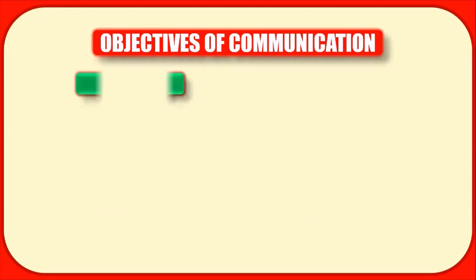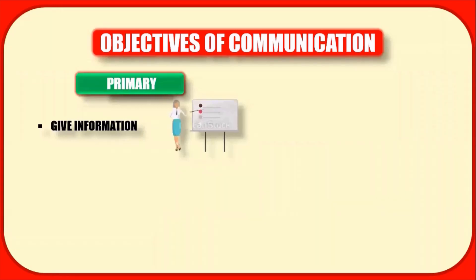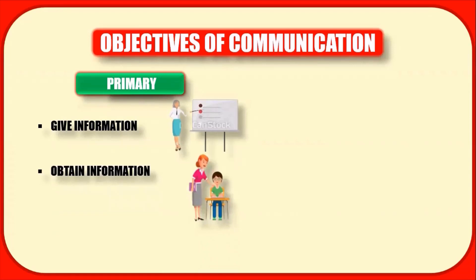Let us start with the primary objectives. The first one is to give information. The sender gives information to the receivers so that he is understood and his ideas are accepted. The receiver in turn also gives feedback to the sender, so the sender encourages the receiver to interpret the information and provide a response. The second primary objective is gathering information from the receivers so the sender can understand them better.